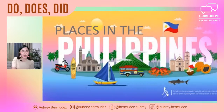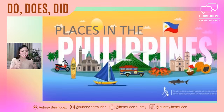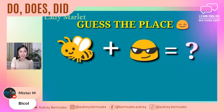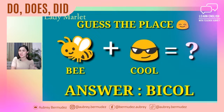Let's proceed to the next category: places in the Philippines. You'll guess what places these are based on emojis, symbols, and pictures. The first one — what province is this? From Mr. M, that is Bicol — because there's a letter B and a man who looks cool. So: B + cool = Bicol. That's correct!